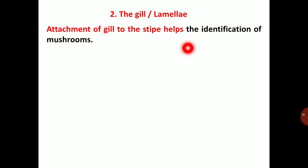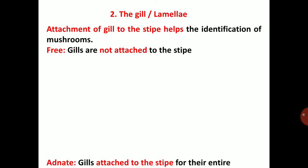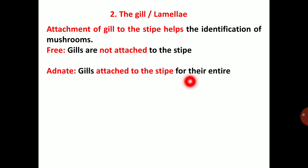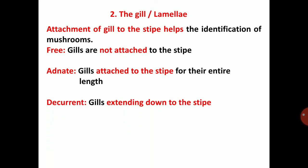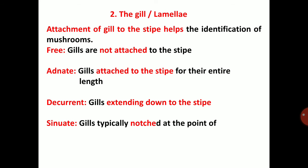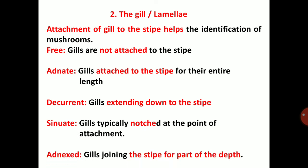Attachment of gills to the stipe helps in identification of mushrooms. There are four types: 1. Free gills — gills not attached to the stipe. 2. Adnate type — gills attached to the stipe for their entire depth. 3. Decurrent gills — gills attached to the stipe and extending down it. 4. Gills typically notched at the point of attachment, or joining the stipe for part of the depth.